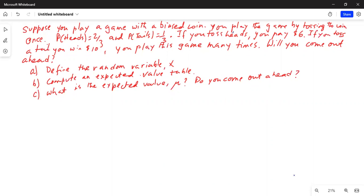Suppose you play a game with a biased coin. You play the game by tossing the coin once. Probability of heads is two-thirds and probability of tails is one-third. If you toss heads, you pay six dollars. If you toss a tail, you win ten dollars.